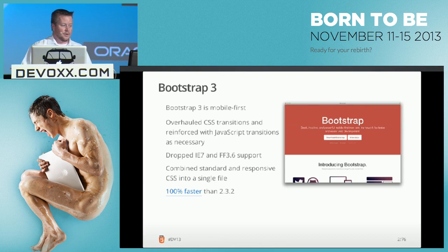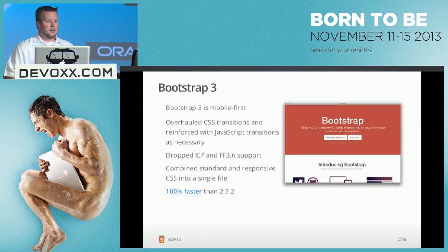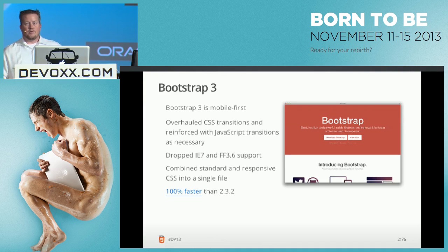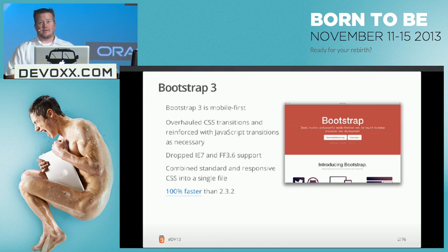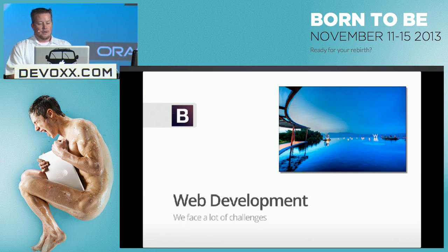Bootstrap 3 is mobile first. They overhauled all their transitions to be CSS-based, reinforced with JavaScript for older browsers. They also dropped IE7 and Firefox 3.6 support — if you need those, use Bootstrap 2. They combined the standard and responsive CSS into a single file. It's 100% faster than the previous version because of how browsers apply CSS to DOM objects. A lot of it is because it now has a flat design, not worrying about rounding corners or gradients — and since Windows 8 and iOS 7, people are liking flat design.